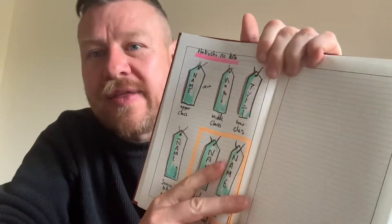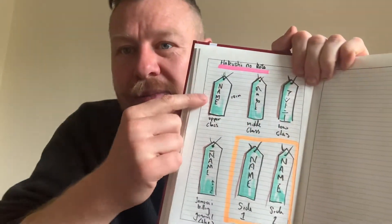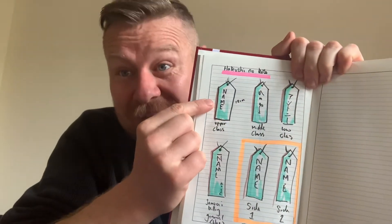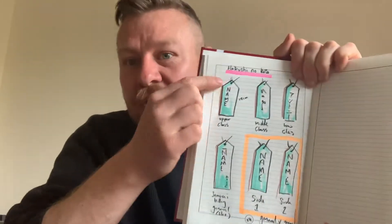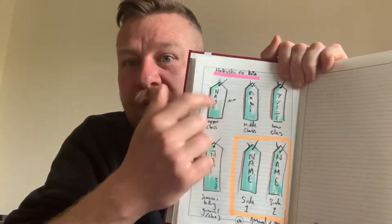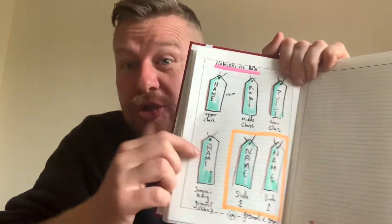This is called Hakushi no Koto, which is basically when you kill an enemy, you have to tag it and you put a tag in it here. This is a piece of paper that is 12 centimetres long and you tie it up with a piece of string. I've got different examples to show you.